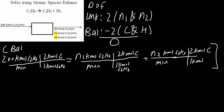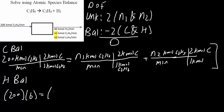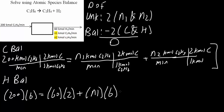If you notice, we have two unknowns — N1 and N2 — so if we need to solve this problem, we need to do an H balance. Same idea: we have 200 times 6, since we have six hydrogens in C2H6. This is equal to: 60 kilomoles of H2 times 2, plus N1 times 6 (since C2H6 contains 6 moles of hydrogen), plus N2 times 4 (since C2H4 has 4 moles of hydrogen). So now we have two unknowns and two equations.